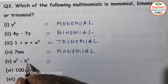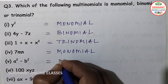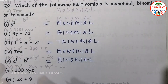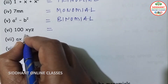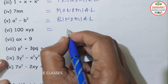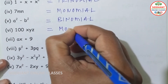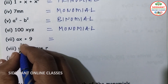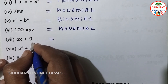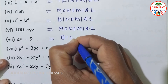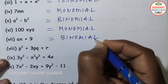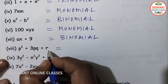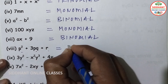Fourth — 7mn — one term, so monomial. Fifth — a square minus b square — two terms, so binomial. Sixth — xyz — one term, so monomial. Seventh — ax plus 9 — two terms, so binomial. Eighth — p square plus 3pq plus r — three terms, so trinomial.